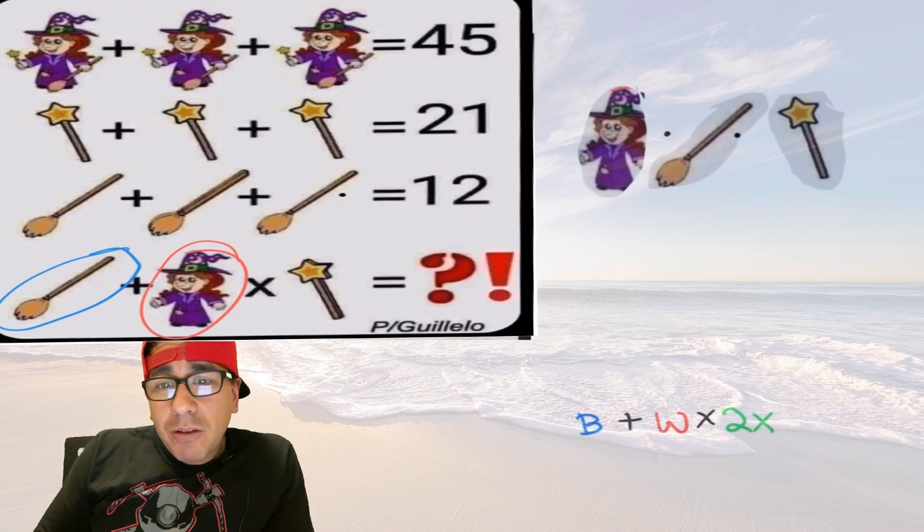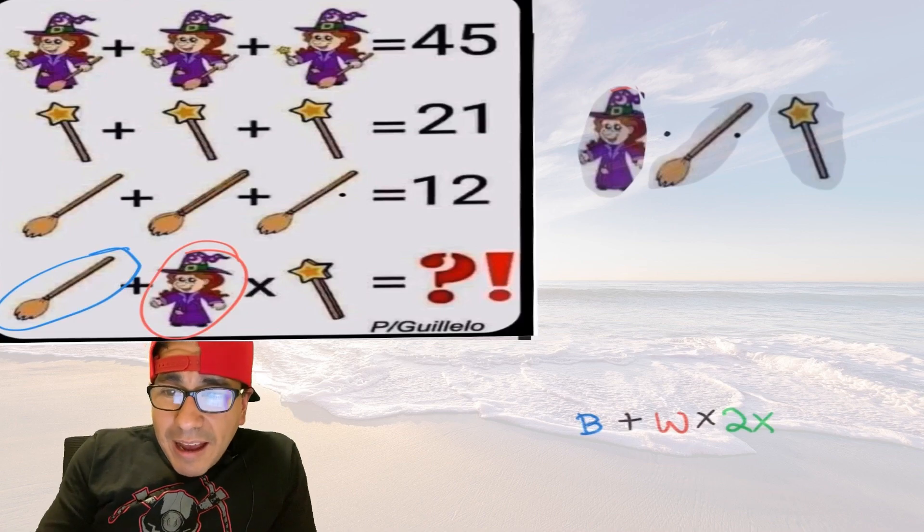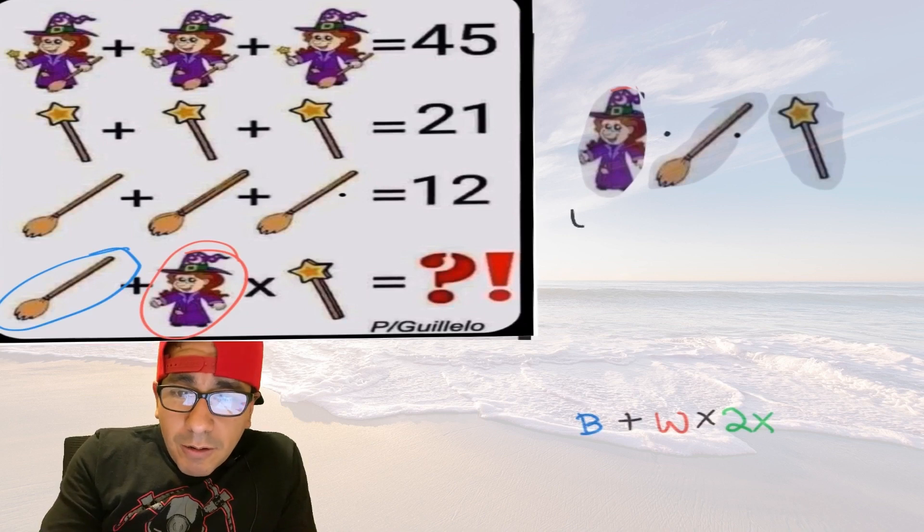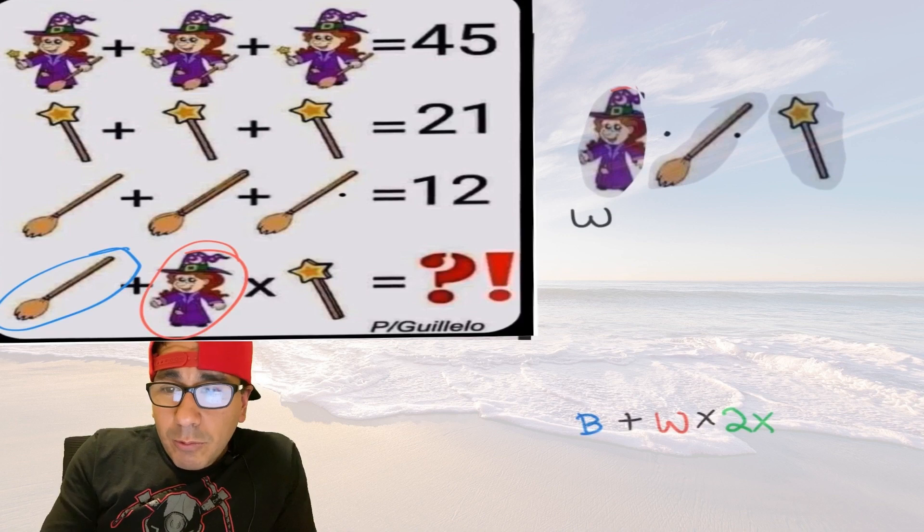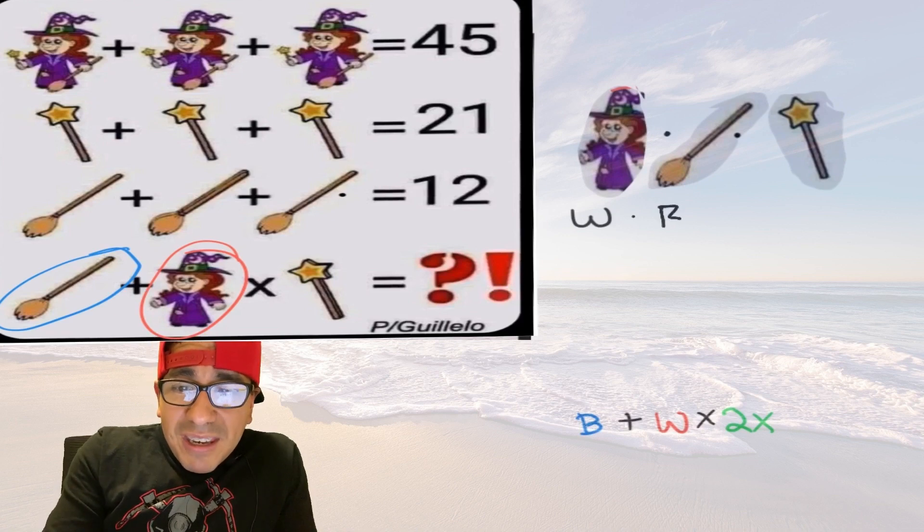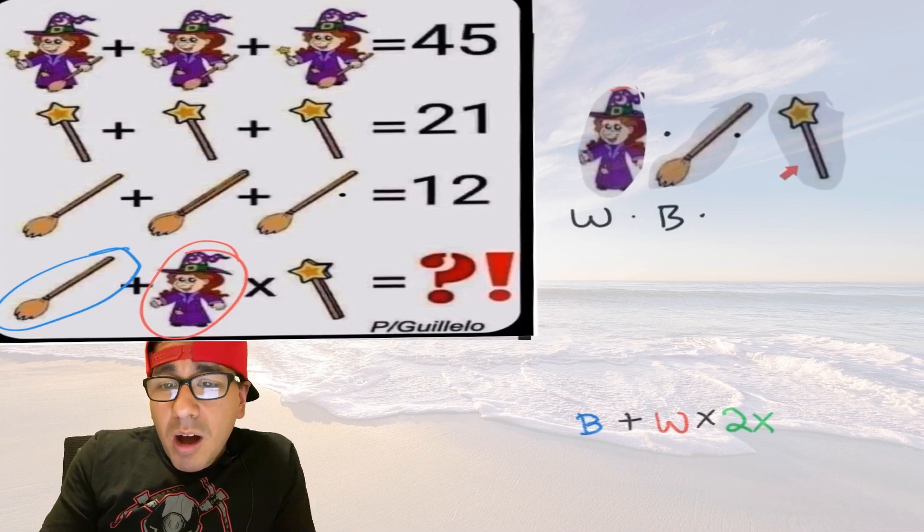So in math the way we think about those are like subscripts and we use different variables. For example here I have the variable W for witch, here for the broom we call the broom B, and for the wand here we call the wand X.